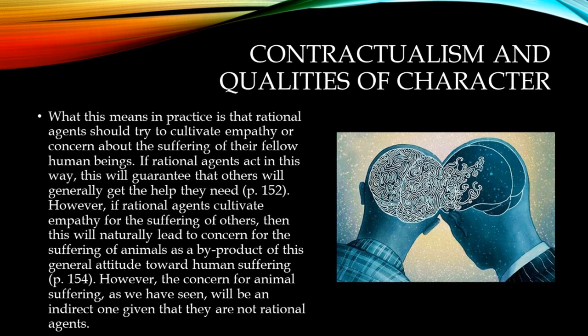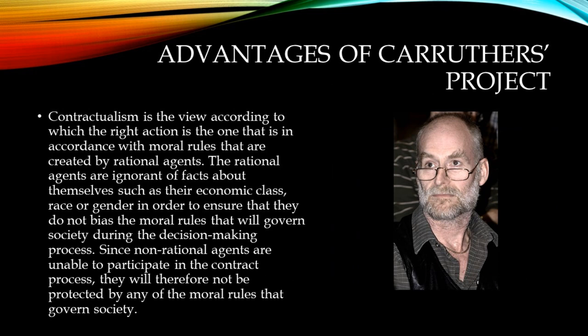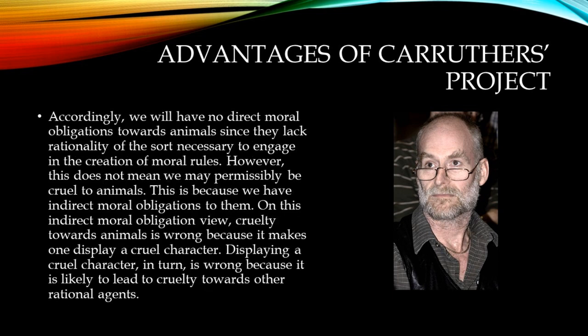To summarize: contractualism is the view according to which the right action is the one that is in accordance with moral rules created by rational agents, who are ignorant of facts about themselves such as their economic class, race, or gender, in order to ensure they do not bias the moral rules during the decision-making process. Since non-rational agents are unable to participate in the contract process, they will therefore not be protected by any of the moral rules that govern society. Accordingly, we will have no direct moral obligations toward animals since they lack the rationality necessary to engage in the creation of moral rules. However, this does not mean we may permissibly be cruel to animals, because we have indirect moral obligations to them. On this view, cruelty towards animals is wrong because it displays a cruel character, which is itself wrong because it is likely to lead to cruelty towards other rational agents.